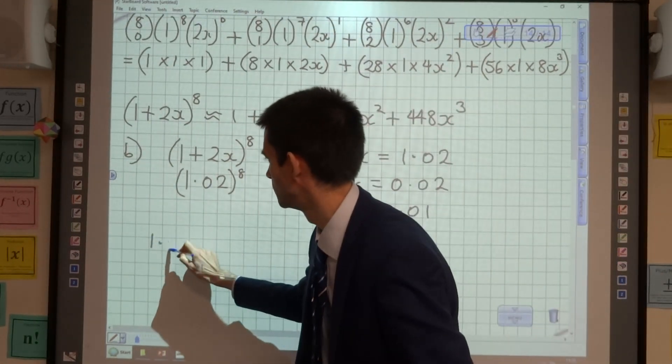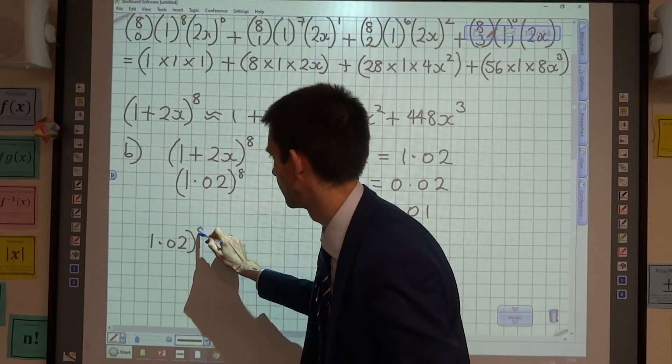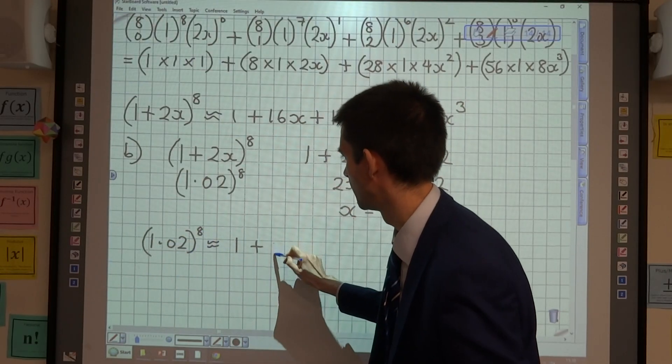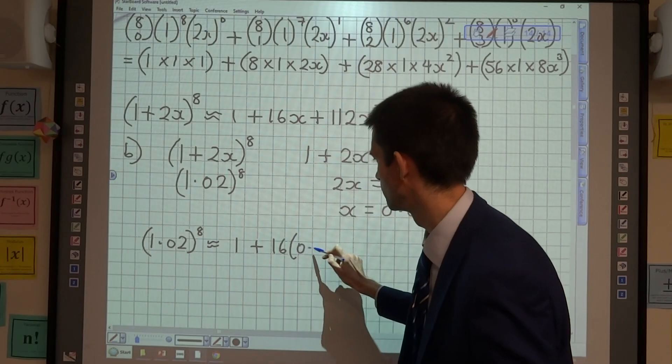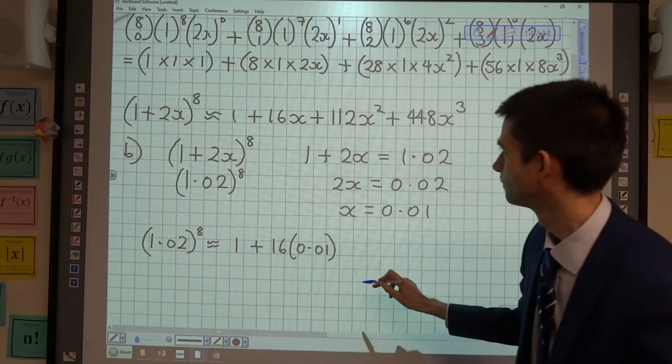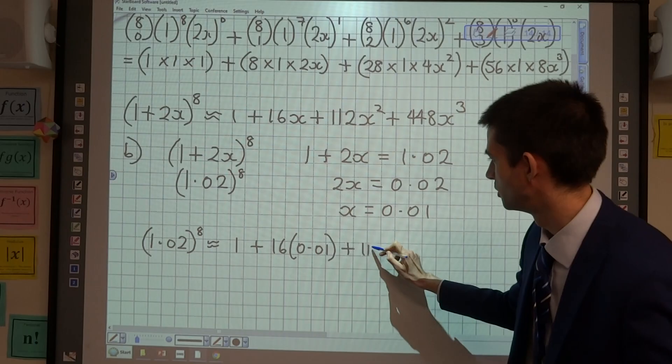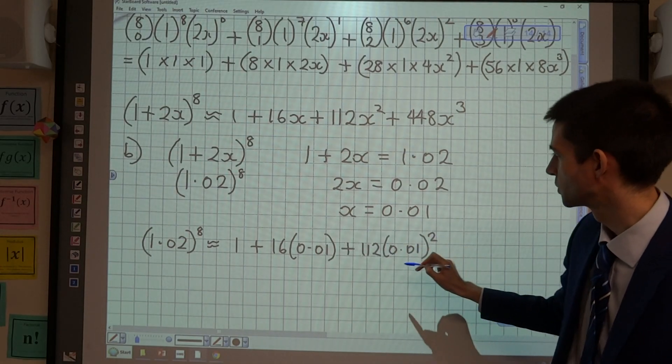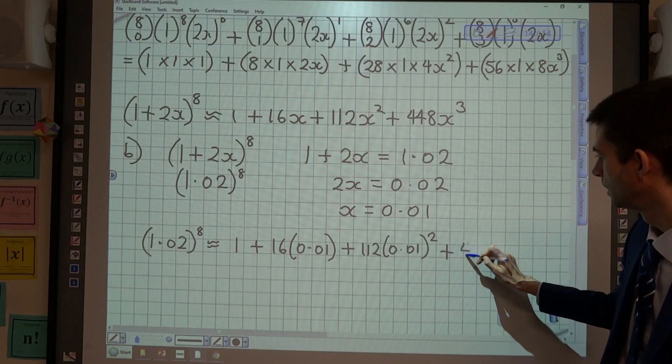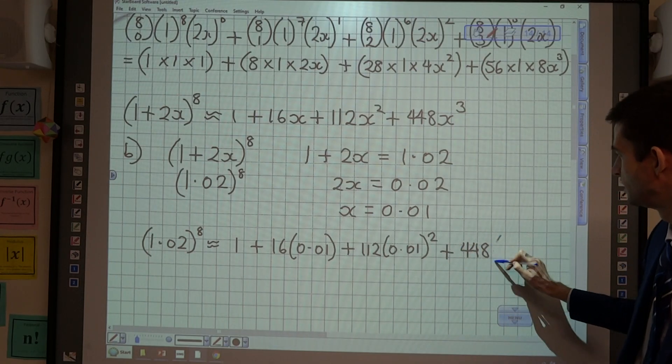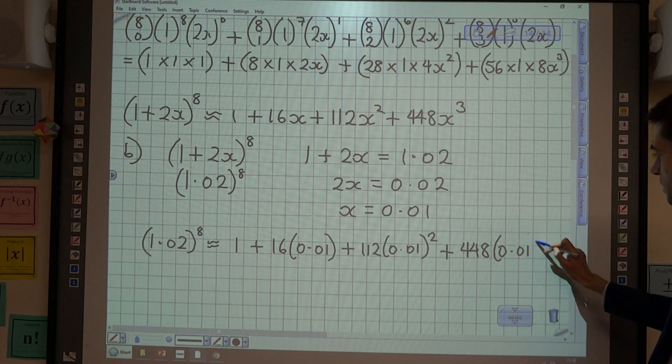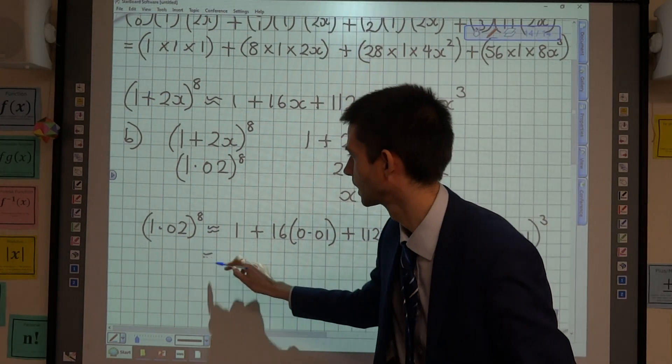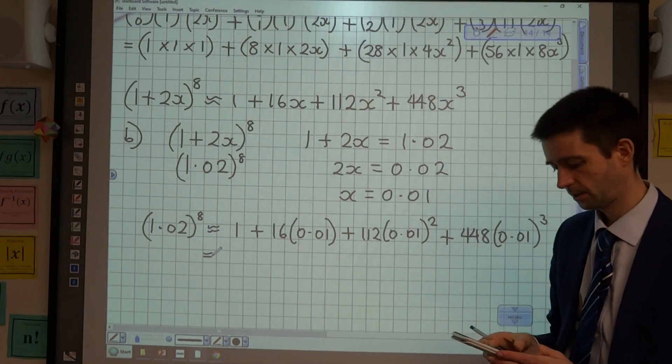So (1.02)^8 is approximately equal to 1 + 16 lots of 0.01 + 112 lots of (0.01)^2 plus 448 lots of (0.01)^3. So I'm just going to get my calculator and work that out.